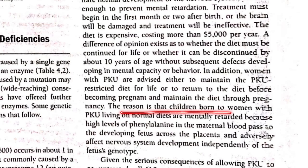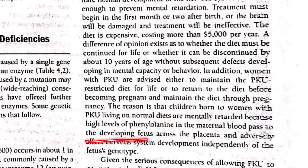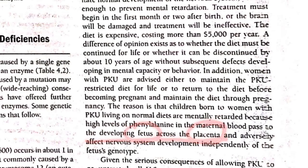The reason is that children born to women with PKU living on a normal diet are mentally retarded, because the high level of phenylalanine in the maternal blood is passed to the developing fetus across the placenta, adversely affecting the nervous system independently of the fetus's genotype.